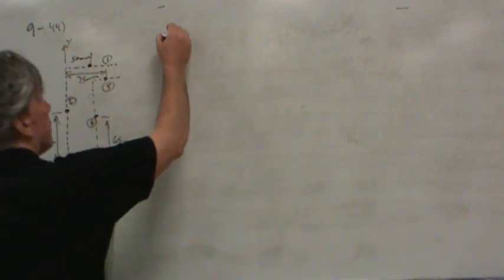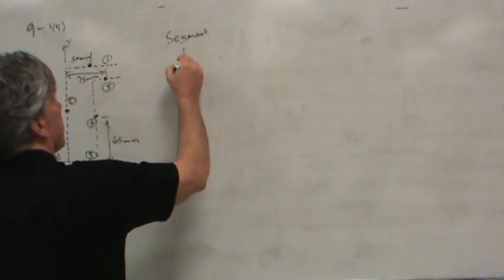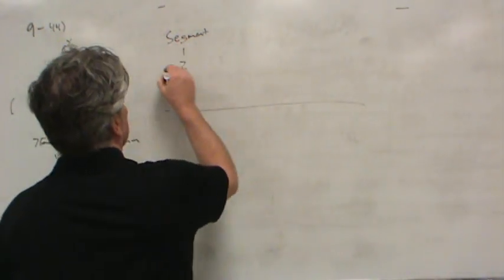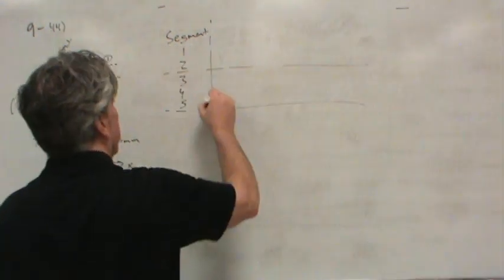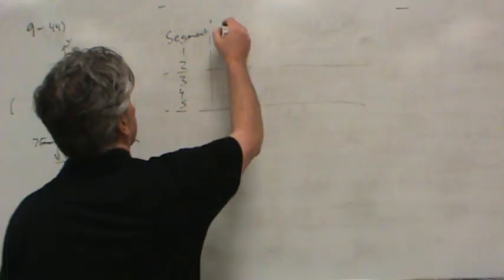So what I did is I made a table of all the segments with their numbers, 1, 2, 3, 4, 5. We'll put some dividing lines in here to keep it all straight, and I just noted the location of each of these along with their length.